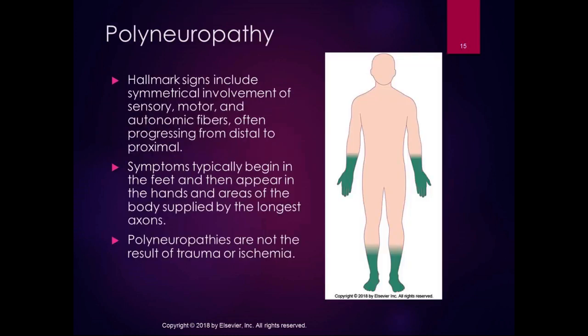Polyneuropathy features symmetrical involvement of sensory, motor, and autonomic fibers that often progress from distal to proximal — considered the hallmark sign. This distal-to-proximal progression is called a sock-and-glove presentation, affecting symmetrically the most distal areas of the extremities. Symptoms appear first in the feet, then the hands, because those areas are supplied by the longest axons, making adequate axonal transport most challenging.